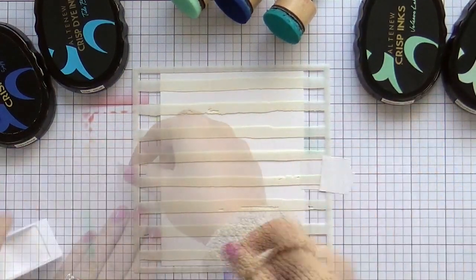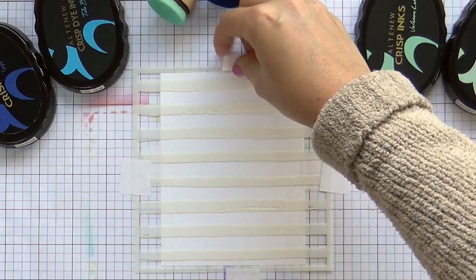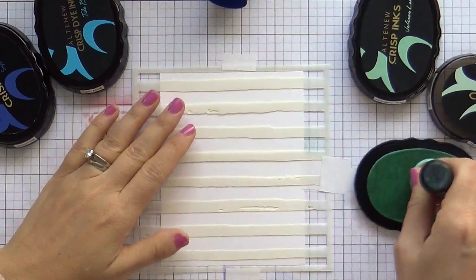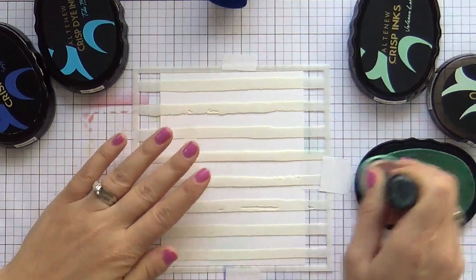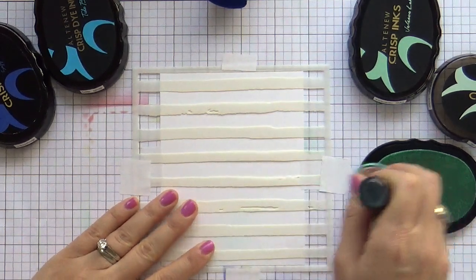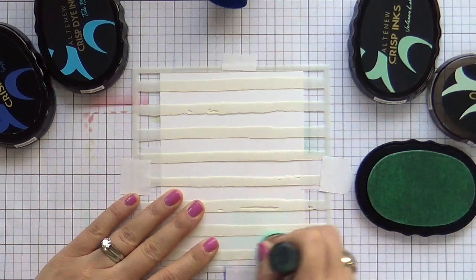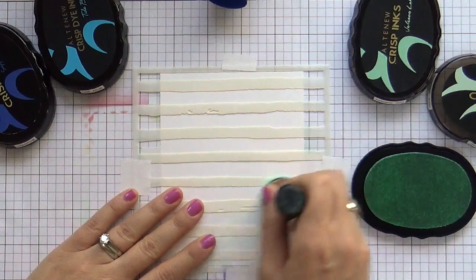I'm going to do some ink blending with these gorgeous Altenew inks, starting with some Mountain Mist. I'm going for a gradient blue watercolor stripe background. I've been craving a change from the red and greens that I've been working with for the past couple months, which I love, but sometimes it's nice to just switch it up, you know what I mean?